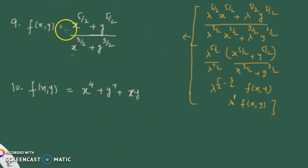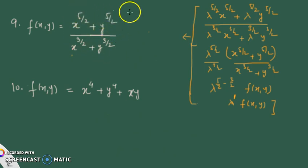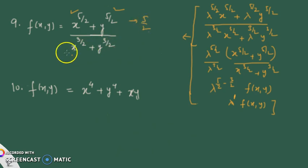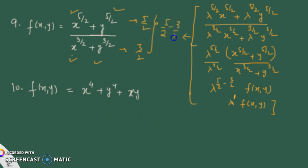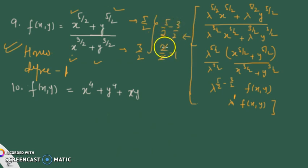Example 9 is f(x,y) = (x^(5/2) + y^(5/2)) / (x^(3/2) + y^(3/2)). It is rational, so applying the same logic: the numerator has each term with degree 5/2, and the denominator has each term with degree 3/2. Since numerator terms share one degree and denominator terms share one degree, it is a homogeneous rational expression. The degree of the overall function is 5/2 minus 3/2 equals 2/2 equals 1. So it is a homogeneous function of degree one.